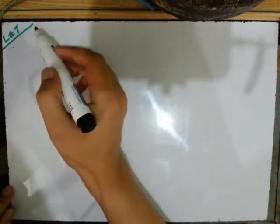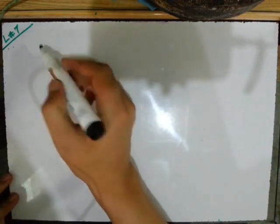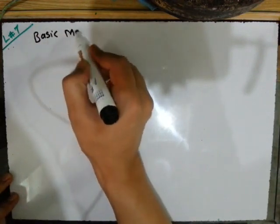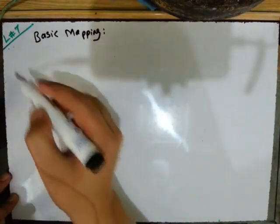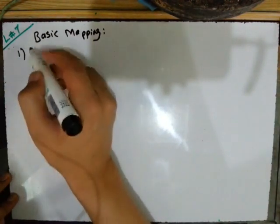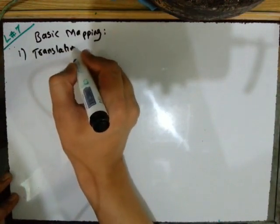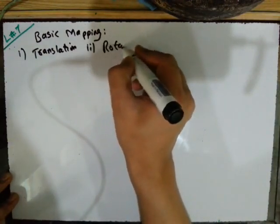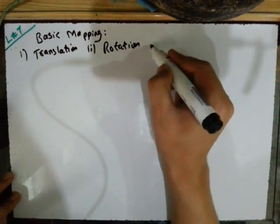Now we will discuss basic mapping. In basic mapping of complex numbers, there are three types: first is translation, second is rotation, and third is reflection.